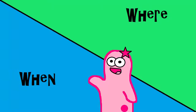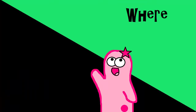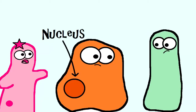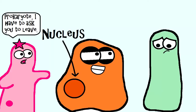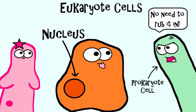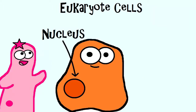First, let's talk about where and when. Where: it occurs in the nucleus, if the cell has a nucleus — remember, not all cells have a nucleus. This video is going to focus on the types of cells that do have a nucleus. They are known as eukaryote cells. Prokaryotes, which are cells that do not have a nucleus, do things a little differently. They also do DNA replication, but that is not going to be our focus for this clip.